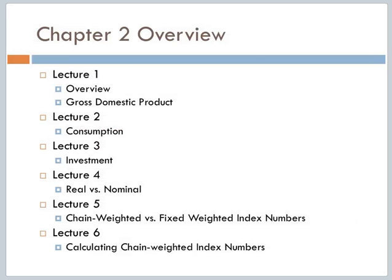First off, I'd like to give a brief overview of our coverage of this chapter. We're going to break this into six separate lectures. In the first lecture, which is this one, we'll give a brief overview and we'll talk a little bit about GDP, which is the most basic measure we're going to talk about. Next, we're going to talk, in lectures two and three, about a couple of the components of GDP, namely consumption and investment.